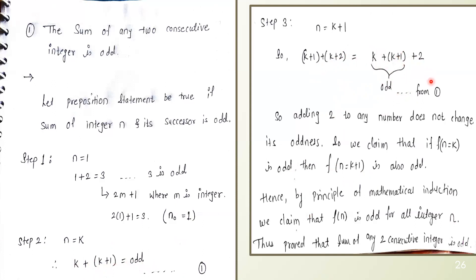So we have odd plus 2. We need to know the property of even and odd numbers: odd plus 2 is always odd. Adding 2 to any number does not change its oddness. So we have proved that if n equal to k is true and odd, then n equal to k plus 1 is also odd. Hence, by mathematical induction, the given statement — the sum of any two consecutive integers is odd — is proved.